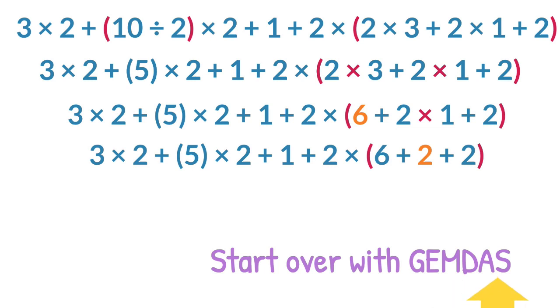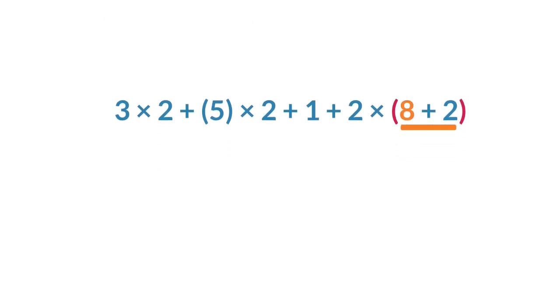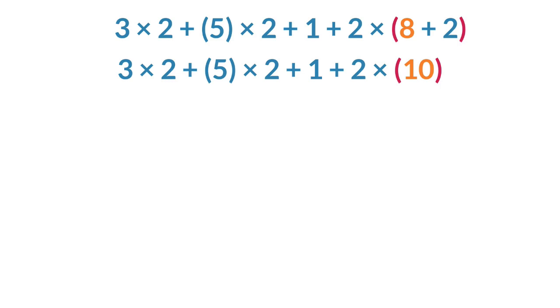There is no more multiplication or division inside the parentheses, so we move to the last operations, addition and subtraction. Add the 6 and 2 to get 8. And finally, add the 8 and 2. This completes all of the operations inside the parentheses.